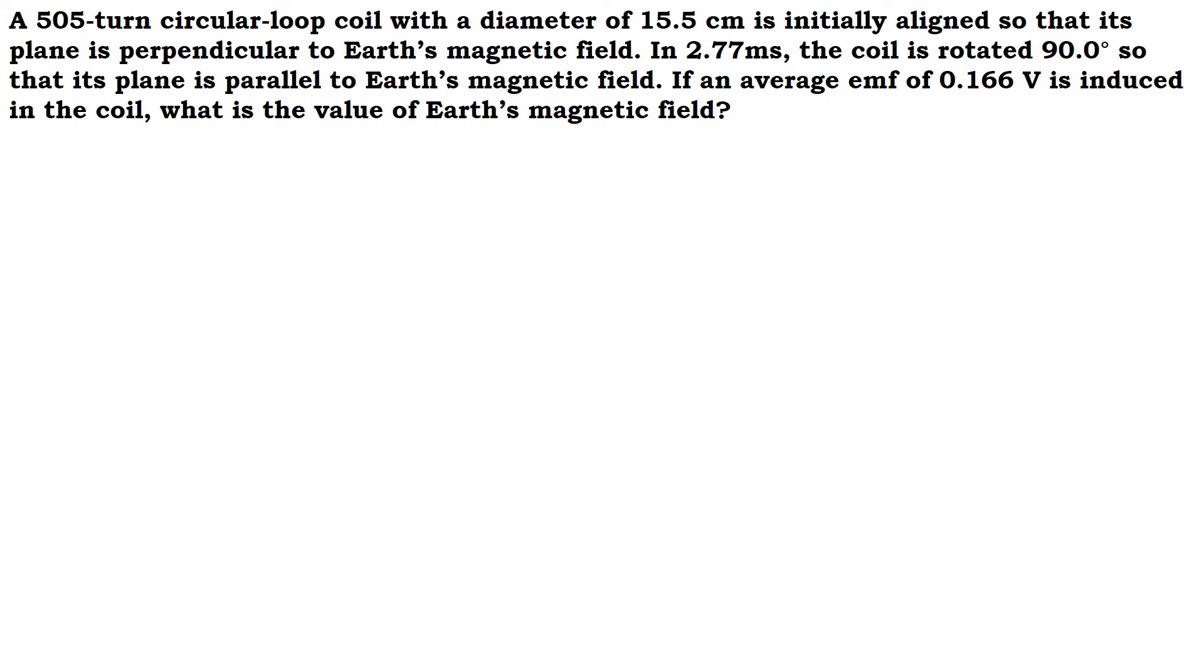A 505-turn circular coil, so the number of turns N is equal to 505 turns, with a diameter of 15.5 centimeters. The diameter is 15.5 centimeters. We convert this to meters, which becomes 0.155 meters.